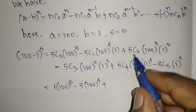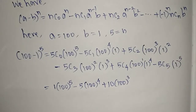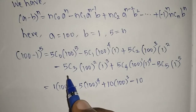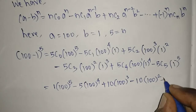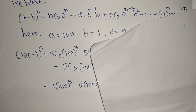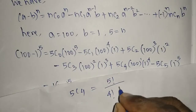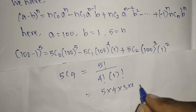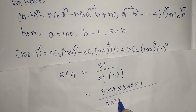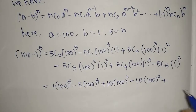So substituting: 10 * 100^3 for 5C2. For 5C3, it is also 10, so minus 10 * 100^2. For 5C4, using the formula: 5! / (4! * 1!) = 5, so plus 5 * 100. And 5C5 equals 1, so minus 1.